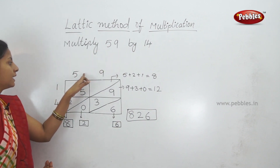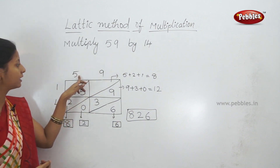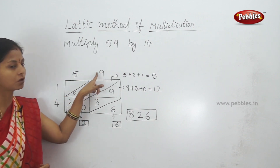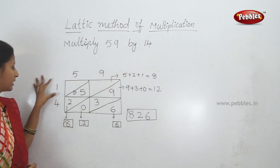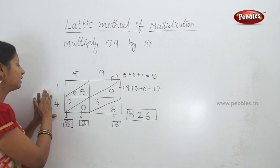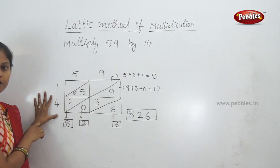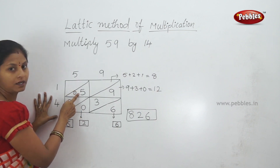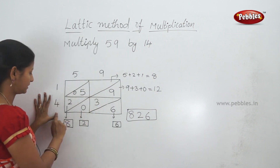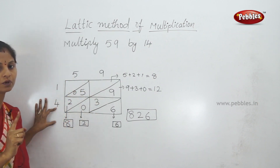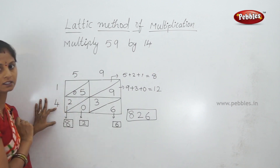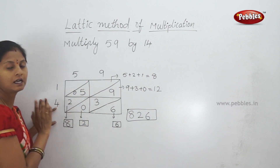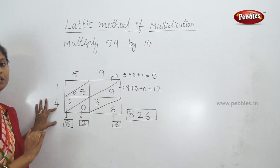Now we need to break up these numbers into single digits. We need to break up 59: this box is 5, this box is 9. This box is 4. Now we need to multiply these numbers in the top position. 1 times 5 is 5. We need 2 parts in the top box. 1 times 9 is 9. Next, 4 times 5 is 20 — a 2-digit number, so 2 and 0. Then 4 times 9 is 36, written as 3 and 6. The numbers are arranged and multiplication is complete.